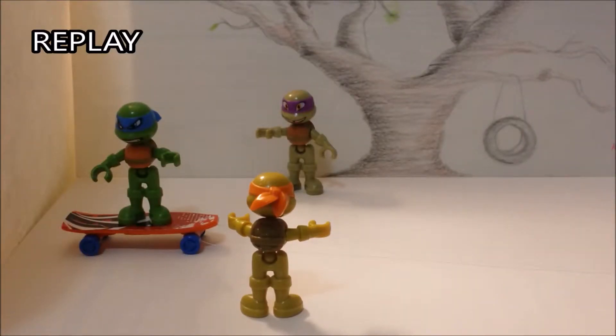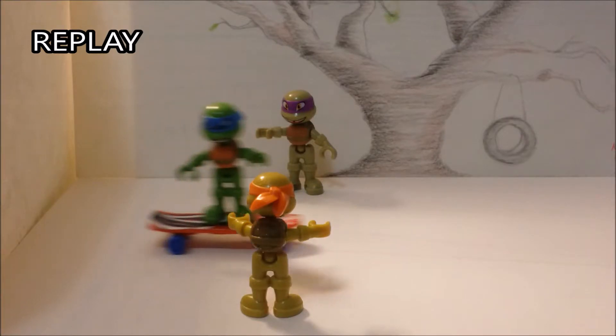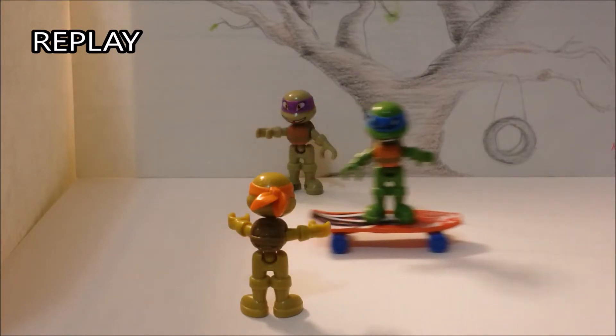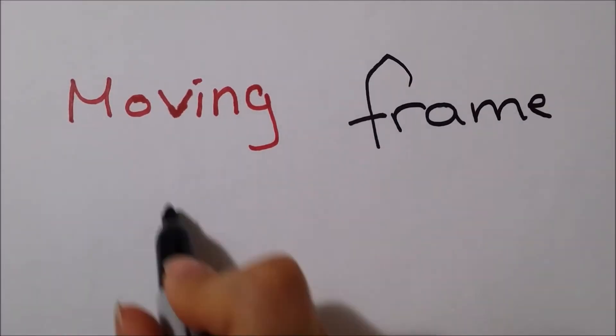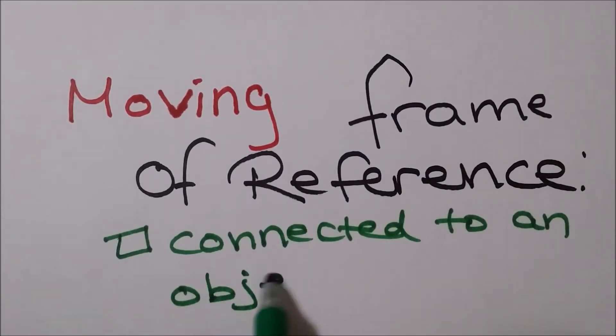Donnie would say that Leo is moving to the left, Mikey would say that he is moving to the right, and Leo would describe himself as moving relative to the ground. A moving frame of reference is connected to an object or an observer in motion.